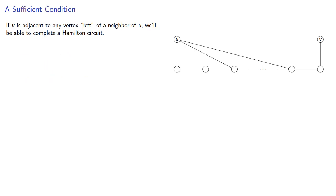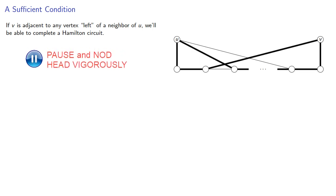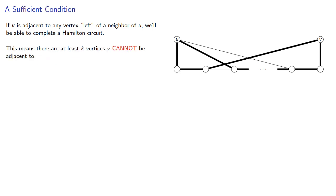Notice that if v is adjacent to any vertex left of a neighbor of u, we'll be able to complete a Hamilton circuit. This means there are at least k vertices v cannot be adjacent to.